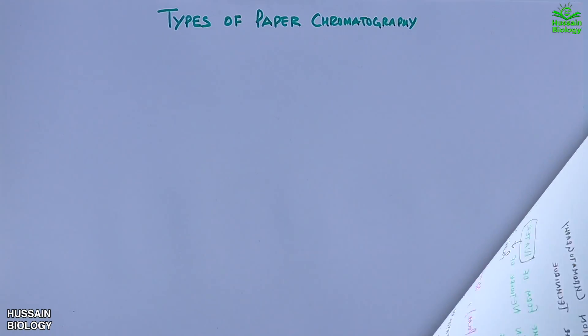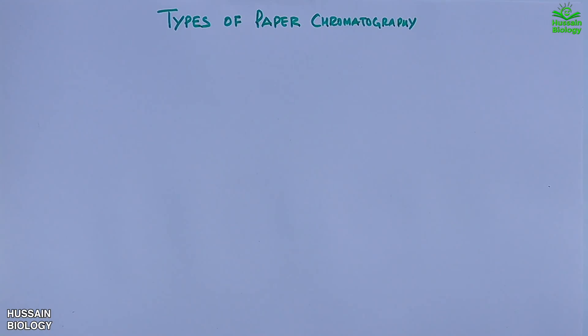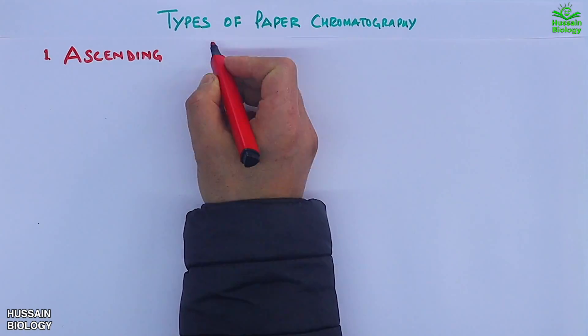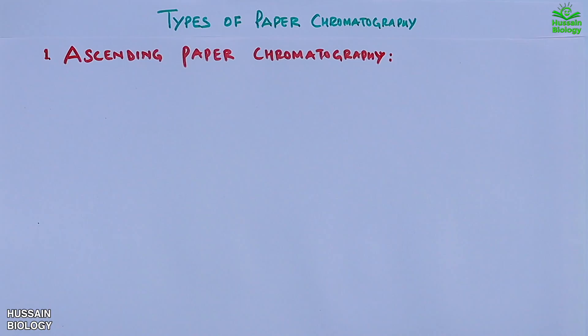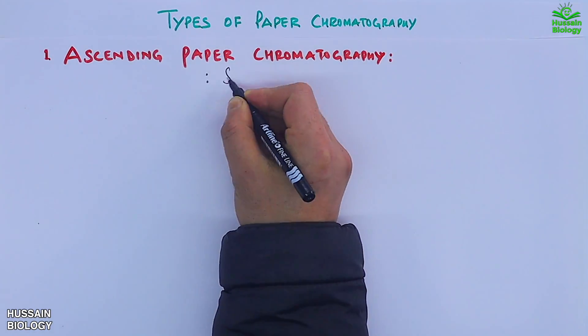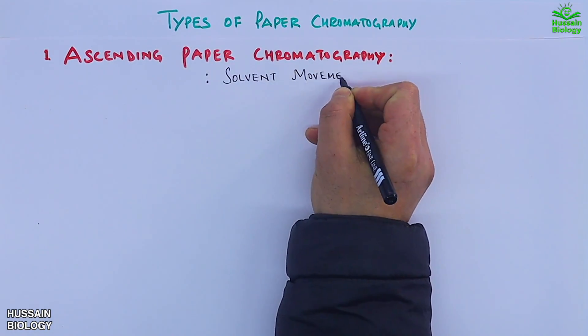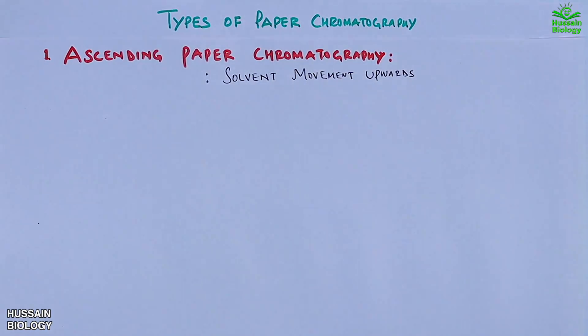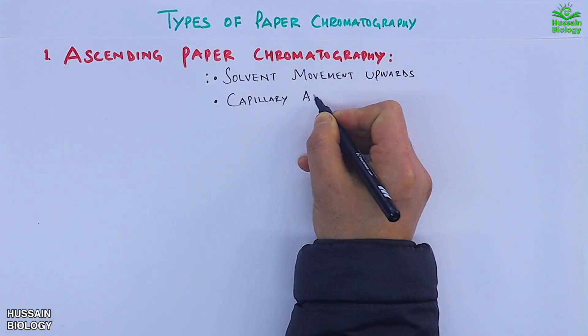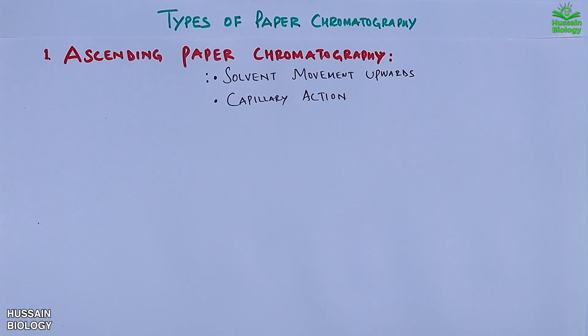Now let's see the types of paper chromatography. First we have ascending paper chromatography, where the solvent movement is upwards and the movement is due to capillary action.